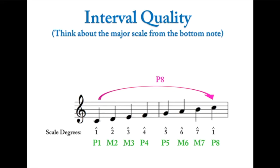Perfect intervals are really just another name for major intervals specific to the fourth, fifth, octave, and unison. There's no such thing as a major fourth or major fifth - we always say perfect fourth and perfect fifth. Remember: fourths, fifths, octaves, and unisons are always perfect, and the other intervals we call major.